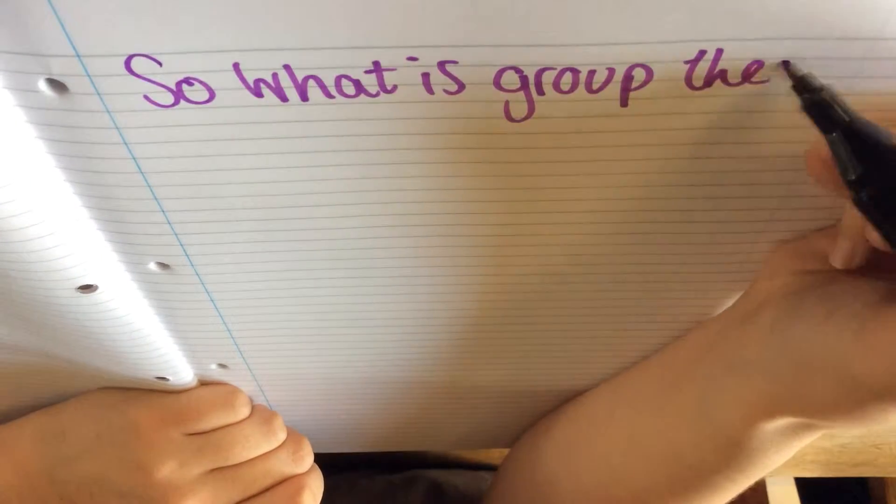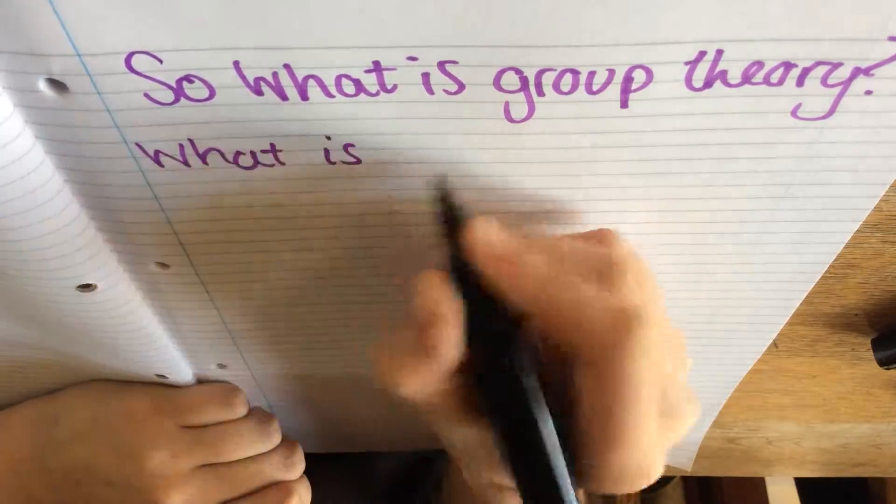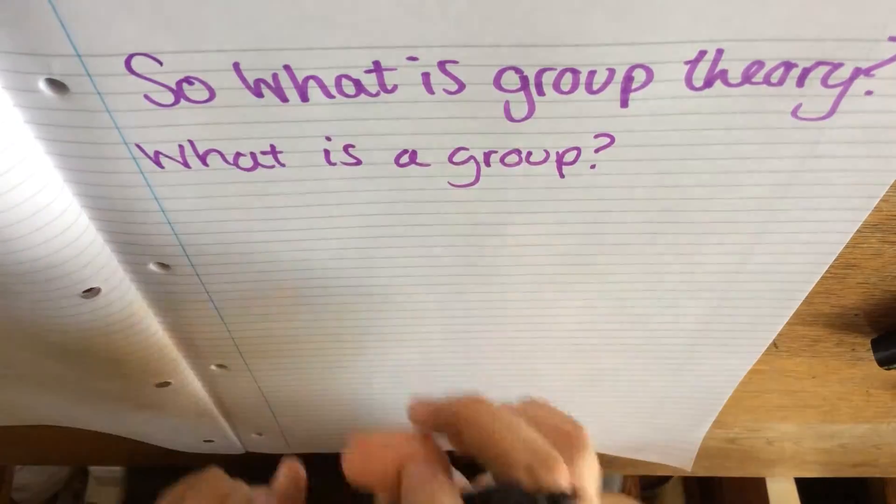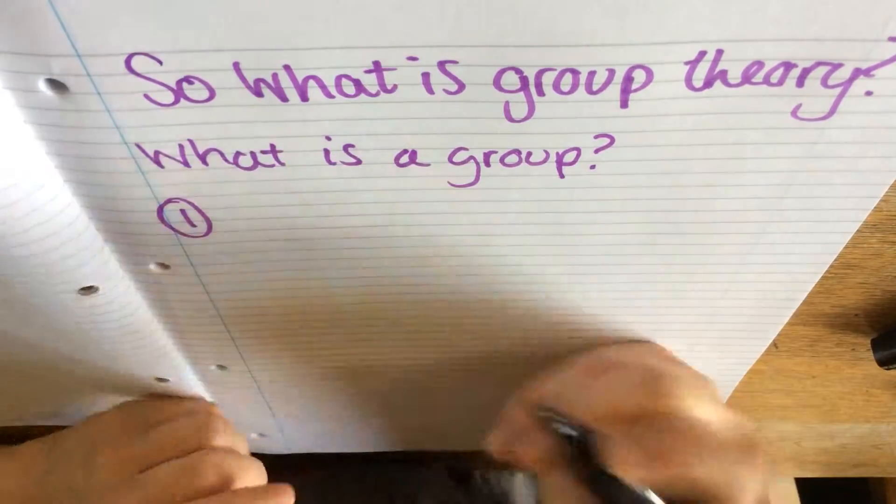So what is a group then? What is group theory? Well, I'm glad you asked. A group has to fulfill four different rules in order to be called a group.